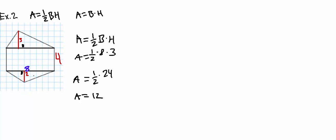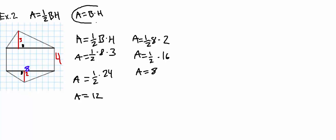Now since we solved the top triangle, we need to solve for the bottom triangle. The formula is area equals one-half base times height. For the bottom triangle, base is 8 and height is 2, so we get one-half times 16. Half of 16 is 8. Now we solve for our rectangle: area equals base times height. Plugging in, base is 8 and height is 4, giving us 32.